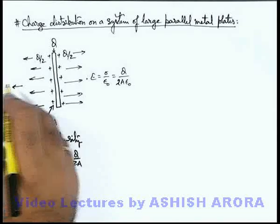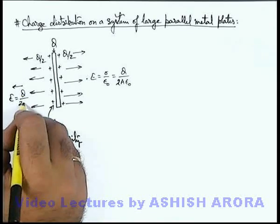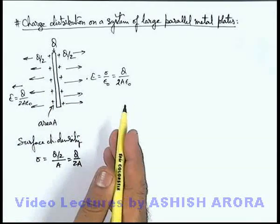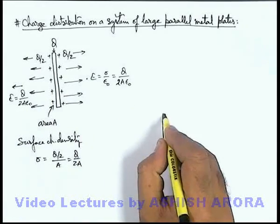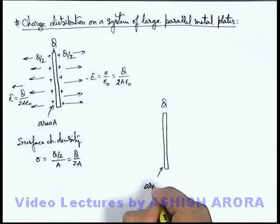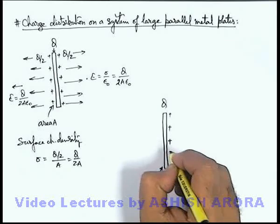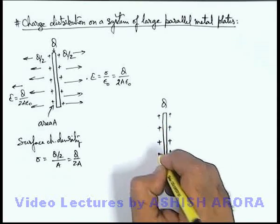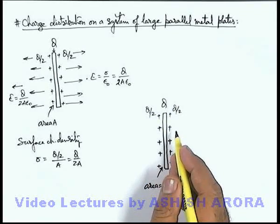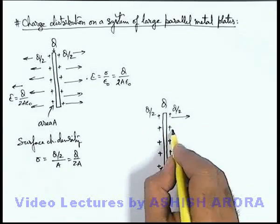On the left side the field is also directed away from the sheet, with magnitude sigma by epsilon-naught, or Q divided by 2A·epsilon-naught. This is how charges are distributed on a single charged plate. The electric flux originated from each face is Q/2·epsilon-naught on both sides, directed away from the plate.